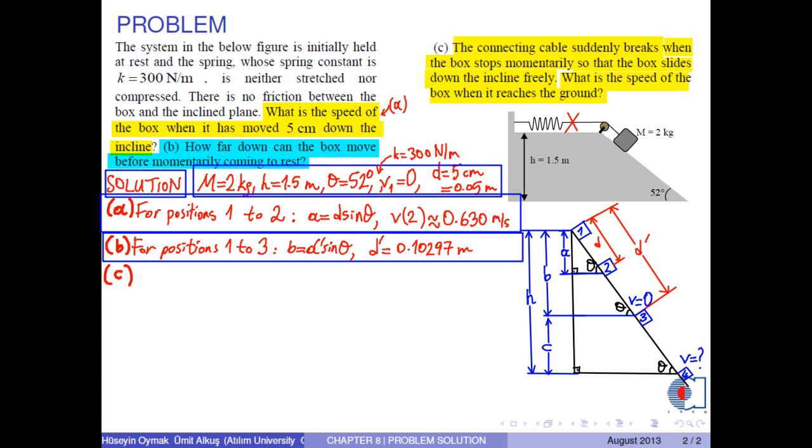For positions 3 to 4, we have height C as H minus B, where height B equals distance D prime times sin θ. Anyway, we write the conservation of total energy as follows.